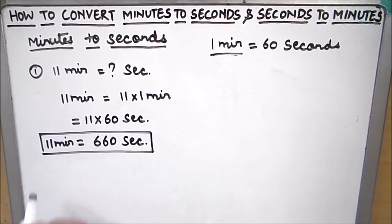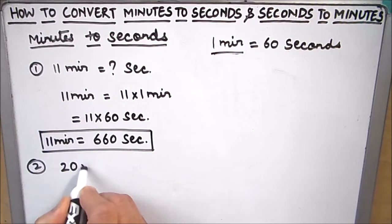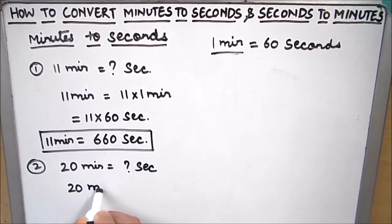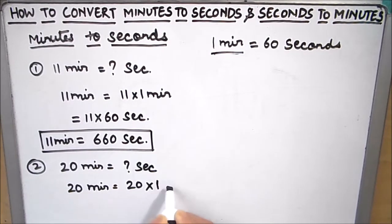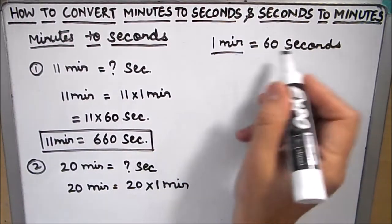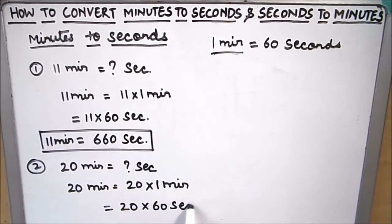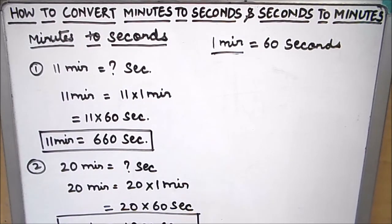Now let's take another example where we convert 20 minutes to seconds. We can write 20 minutes as 20 times 1 minute, and in place of 1 minute we are going to replace it with 60 seconds. So this will be 20 times 60 seconds, which comes out to be 1200 seconds. So 20 minutes will be equal to 1200 seconds.